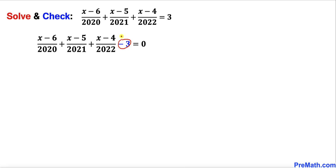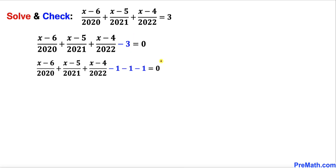I can write negative 3 as negative 1, negative 1, and negative 1, as you can see in this next step. Now I am going to move these numbers such that this negative 1 goes next to the first term, this negative 1 goes next to the second term, and this negative 1 goes next to the third term.